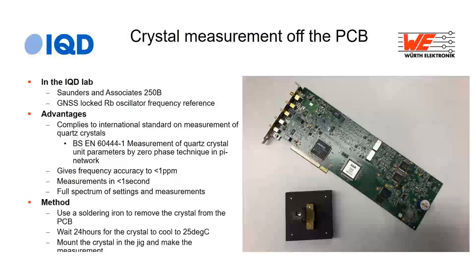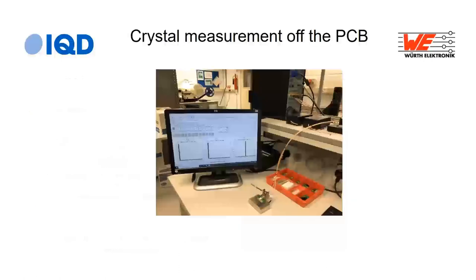To make this measurement, desolder the crystal from the PCB and wait for it to cool. Officially you should wait 24 hours to de-stress; in practice, 40–60 minutes is usually sufficient for a small crystal if you watch the frequency stabilize. Temperature is critical — crystals change frequency with temperature, so make sure your lab is at a stable 25°C, consistent with the standard measurement condition.